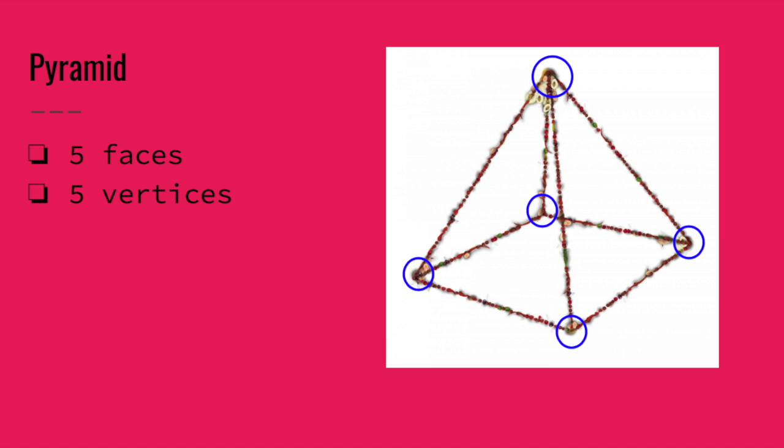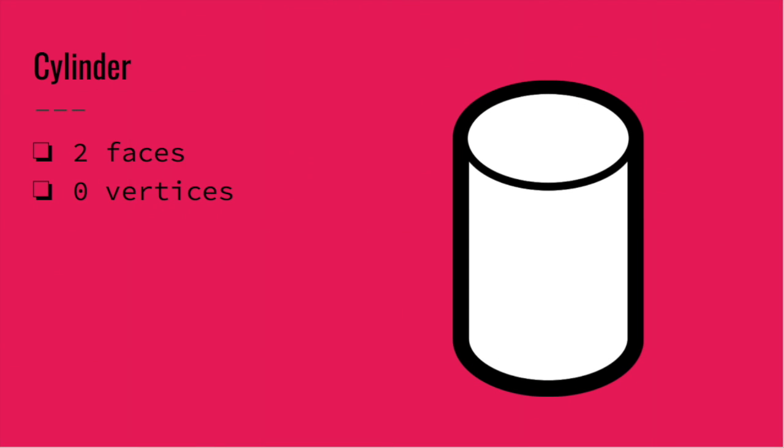And the final shape we have is our cylinder. Our cylinder has two faces and zero vertices. One face at the top and one face at the bottom.